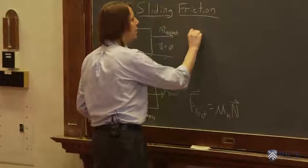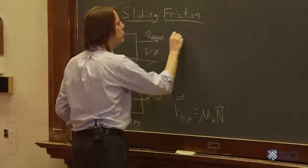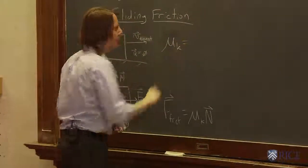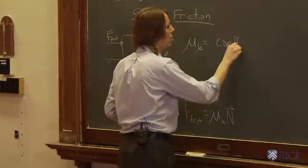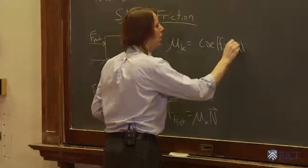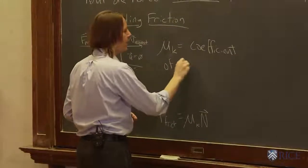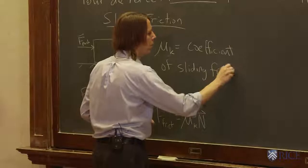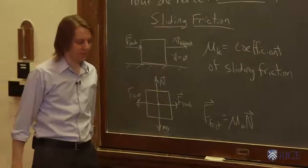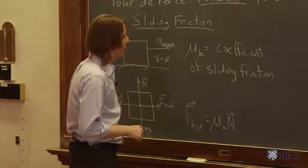Where μk is the coefficient of sliding friction, or sometimes called kinetic friction. That's why it's a k. It's for things that are moving. So it's a coefficient. You can see it's unitless, right? Because this is a force and this is a force. Those are both in Newtons.